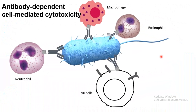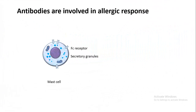Antibodies can also bring about antibody-dependent cell-mediated cytotoxicity (ADCC). Antibodies coat the surface antigens of a bacterium or another pathogen. Many cells of our immune system — such as eosinophils, macrophages, neutrophils, and NK cells — have Fc receptors that bind to the Fc region of the antibody, thereby engaging all these immune cells against the bacterium and killing the pathogen.